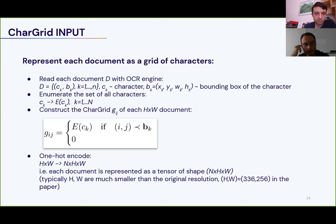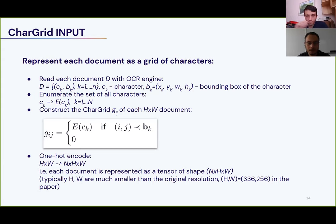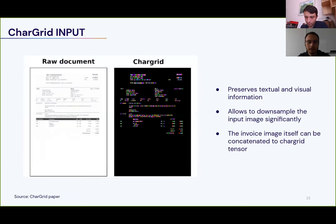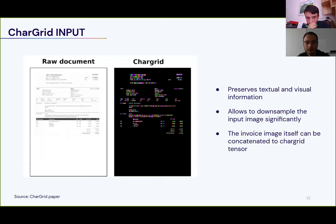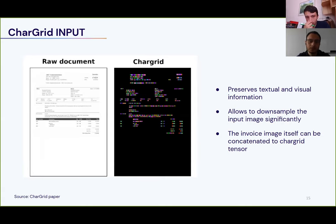For a given invoice, we build the so-called char grid: at the (i, j) coordinate of the grid, we insert the enumeration value of the character written at that location in the original invoice; if there is no character, zero is inserted. This gives us an H×W matrix with values from zero to N. We then one-hot encode the tensor, so the network input has shape H×W×N. The advantage of this preprocessing is that it preserves all textual information. By also concatenating the invoice image itself to the char grid, we retain all visual information as well.